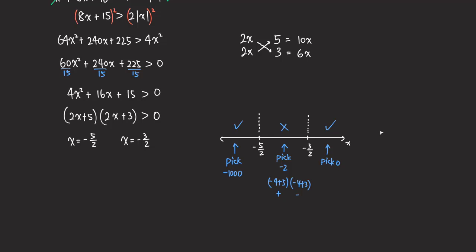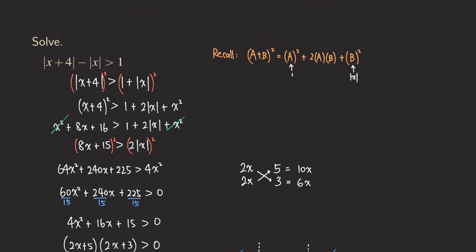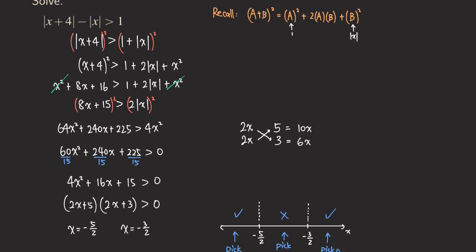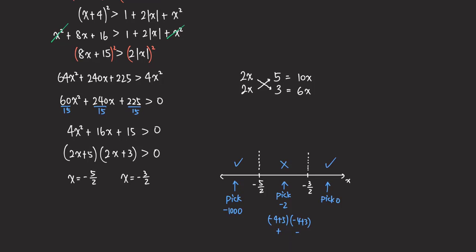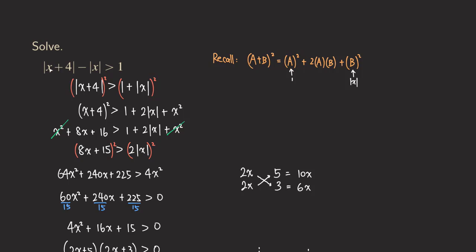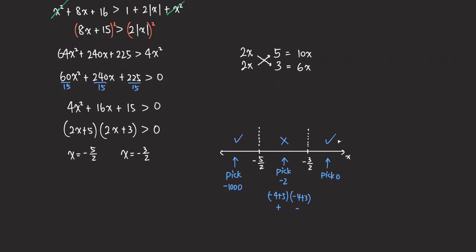Because we're doing squaring, we have to be more careful. Just because we get those two intervals doesn't mean it's guaranteed they will work. We still have to do a little more checking — not just plugging back into the simplified form, but we also need to go back to the original inequality to make sure it works. If we plug zero into the original, we get 4 minus 0 still greater than 1, so that still works.